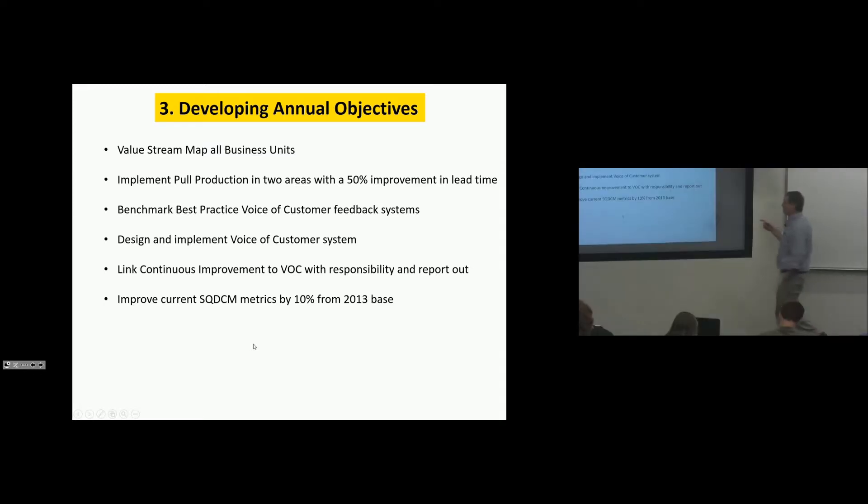Improve current SQDCM metrics by 10% from 2013 base. So SQDCM, if you remember, those are our metrics that we run by. Safety, quality, delivery, cost, morale. By the way, this is interesting. The company we were at yesterday, Brosa, they have quality, delivery, cost, and morale. I'm sure they do safety. They probably manage it in a separate area, but if you go to all their boards, they have quality, delivery, cost, and they don't call it morale. They call it people. And they do every two-year survey to see how happy their organization is. So I was pretty impressed that they do that.